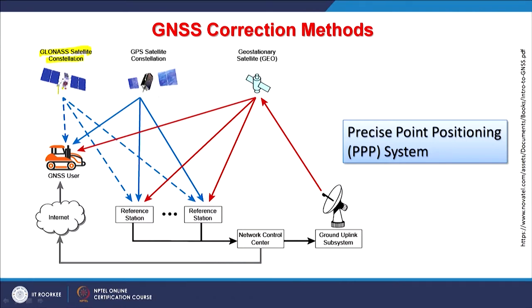The corrections can be applied and a high level of position accuracy can be achieved. Through this schematic, let us discuss that there are various GNSS constellations — one of them highlighted here is the GPS constellation — along with GLONASS, BeiDou, Galileo and IRNSS (NavIC). These GNSS constellations provide locations to reference stations. Basically, as in differential GNSS, we call them base stations, and these base stations, through a network control center, collect and process data.